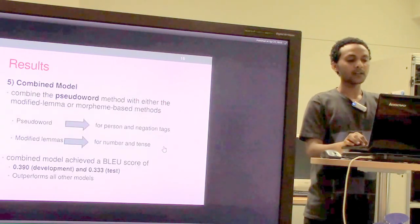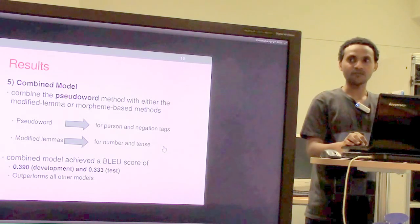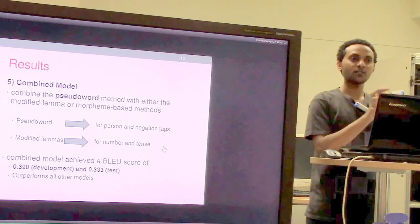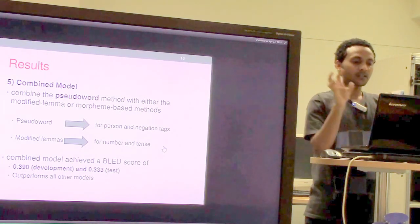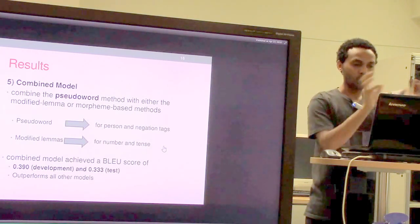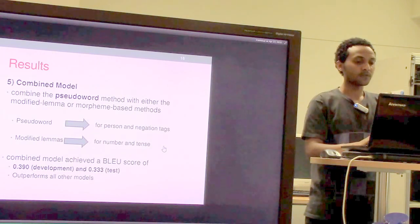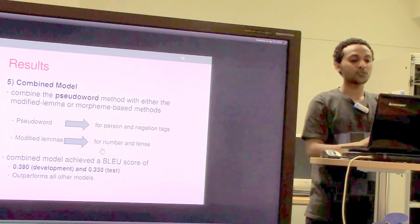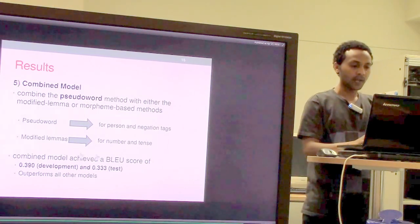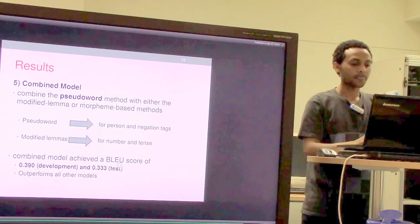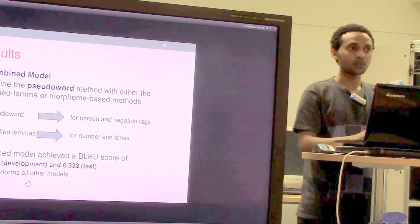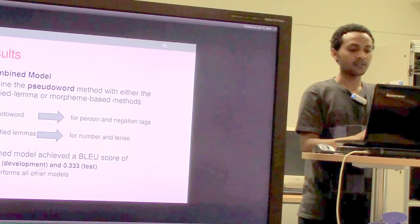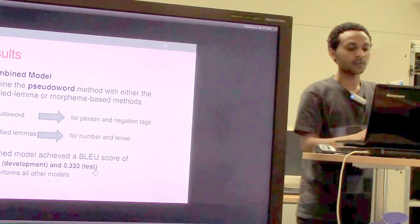By collecting information from all four cases, they understood which method suits which task. By combining the methods — pseudo words applied to person and negation tags, and modified lemmas applied to number and tense — they constructed a combined model that outperforms all individual cases. The highest score is 0.39 for the development set and 0.33 for the test set.